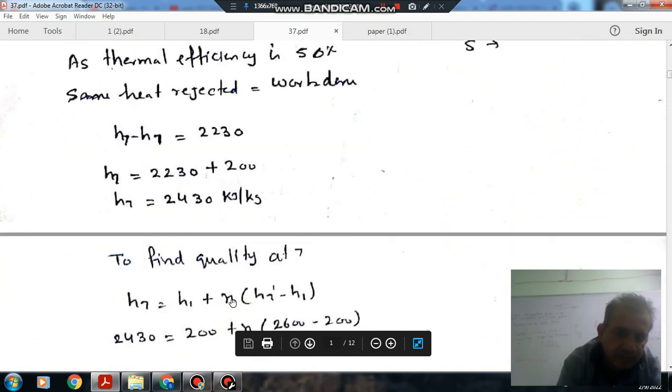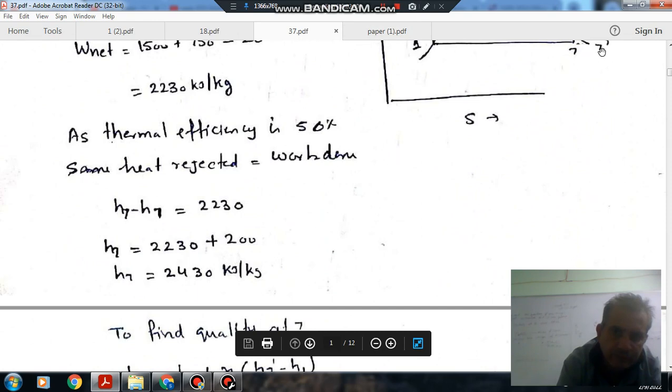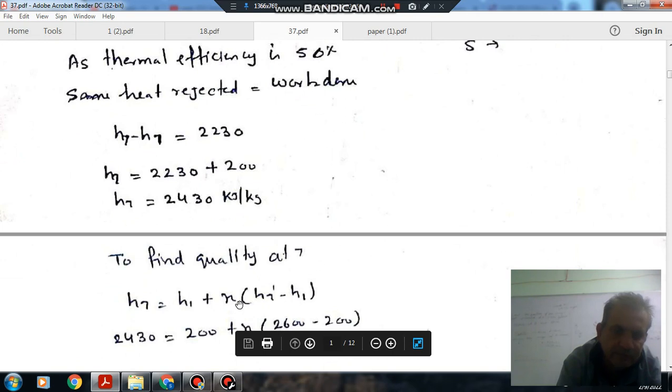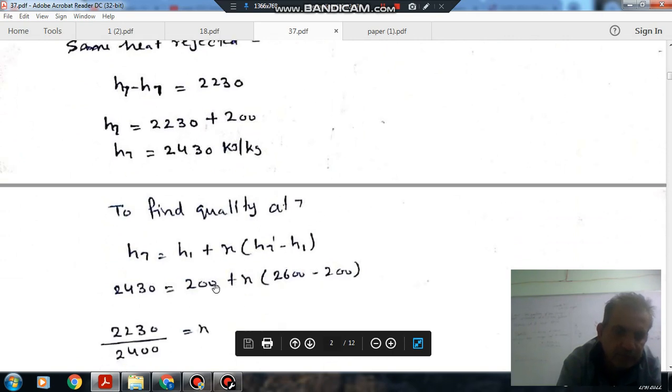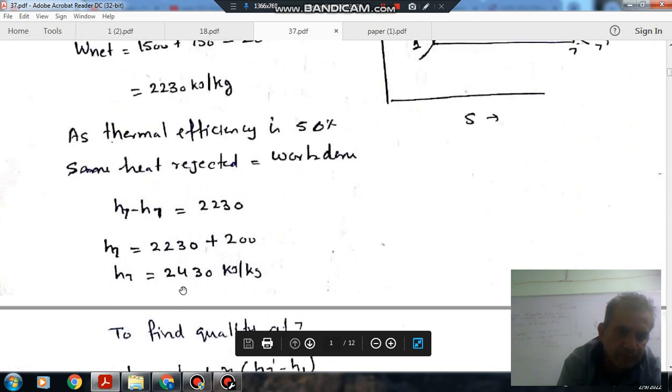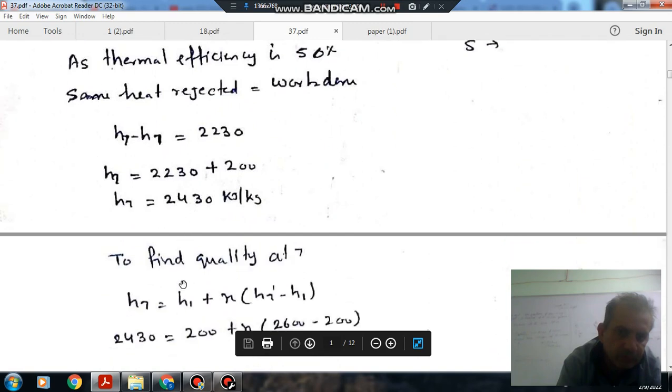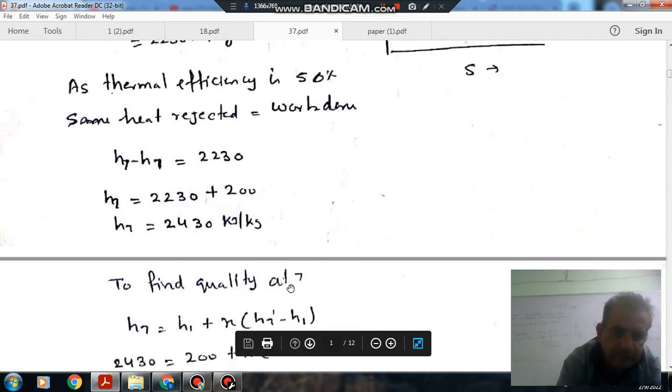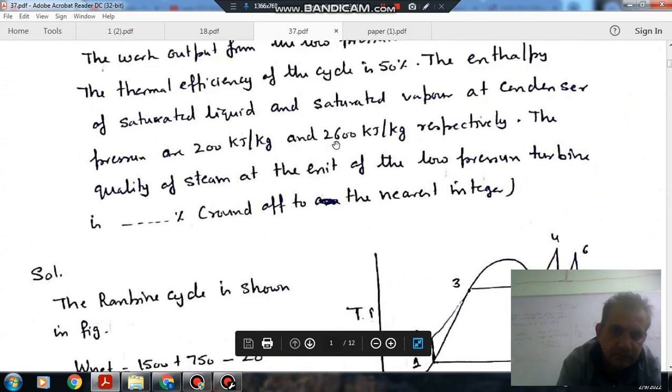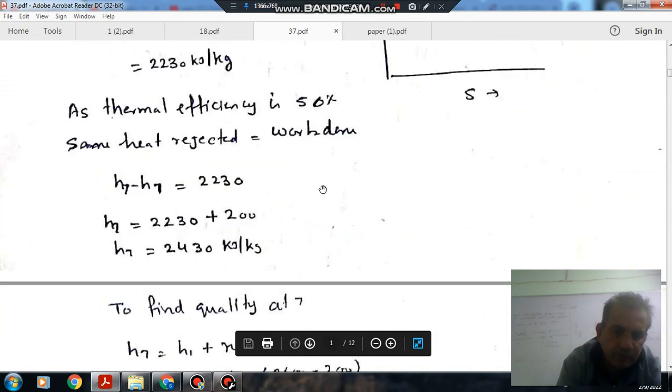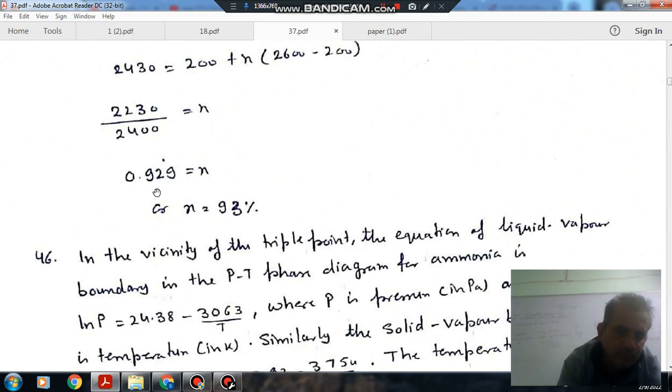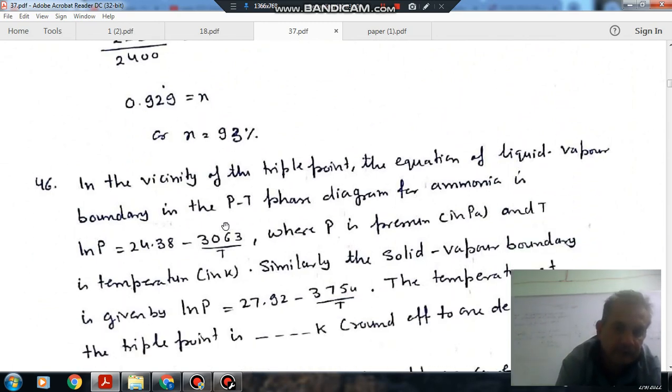So H7 = H1 + (H7' - H1) × X, where X is the quality of steam. H7 is 2430 that we have calculated. H1 is 200 and H7' is 2600. By putting the values, X equals 0.929. Next, question number 46.